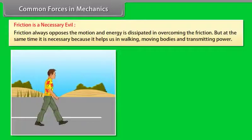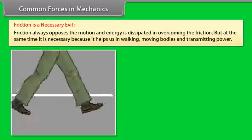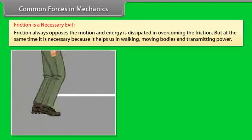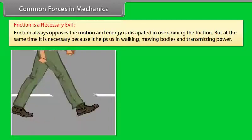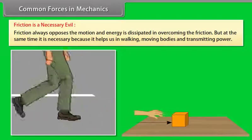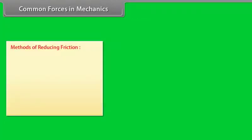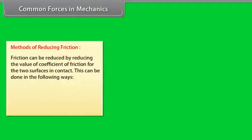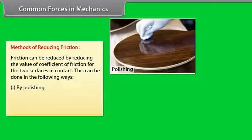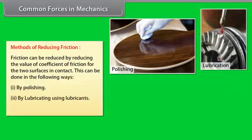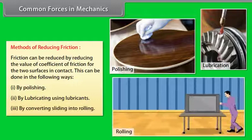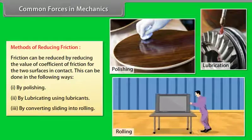Friction always opposes motion and energy is dissipated in overcoming it, but at the same time it is necessary because it helps us in walking, moving bodies, and transmitting power. Friction can be reduced by reducing the coefficient of friction, which can be done by: (1) polishing, (2) lubricating using lubricants, and (3) converting sliding into rolling.